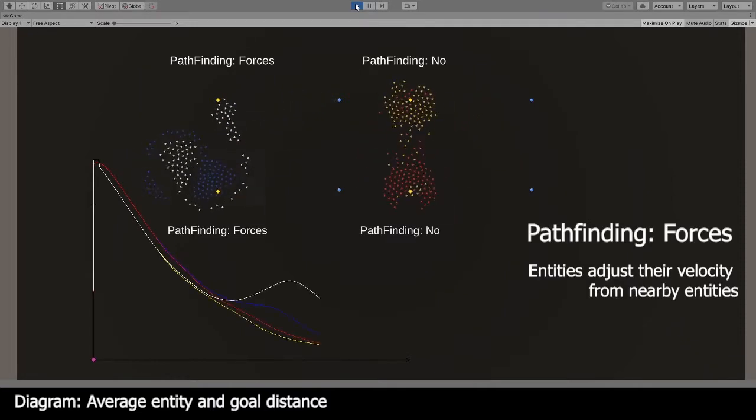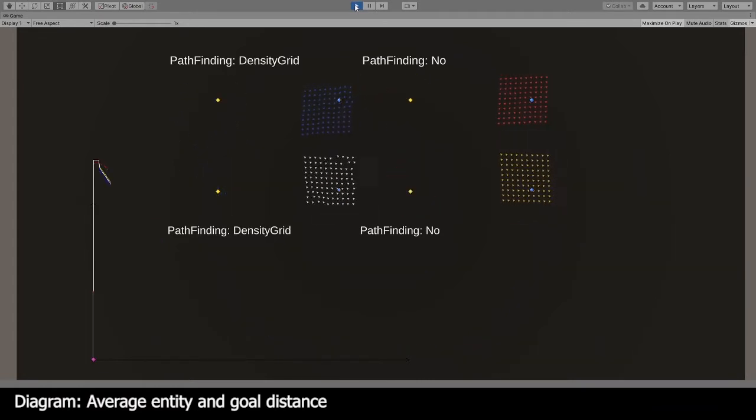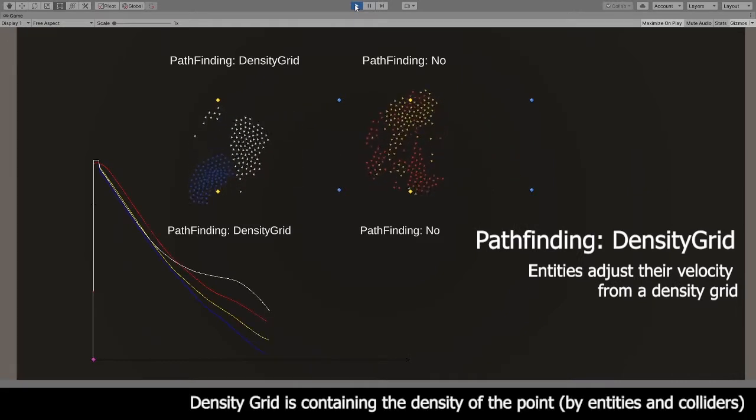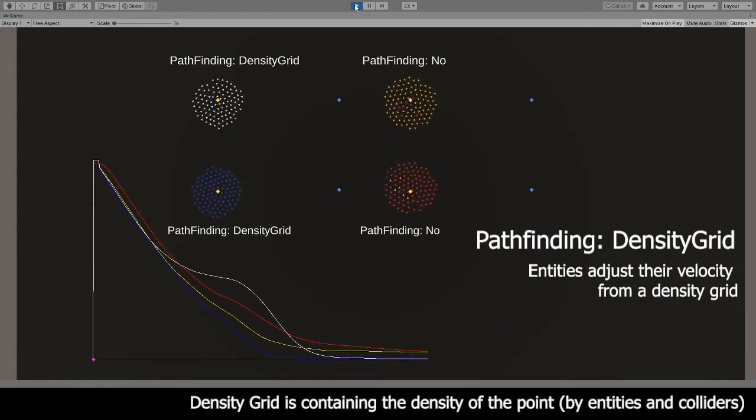Pathfinding forces: entities adjust their velocity from nearby entities. Pathfinding density grid: entities adjust their velocity from a density grid. The density grid contains the density of the point by entities and colliders.